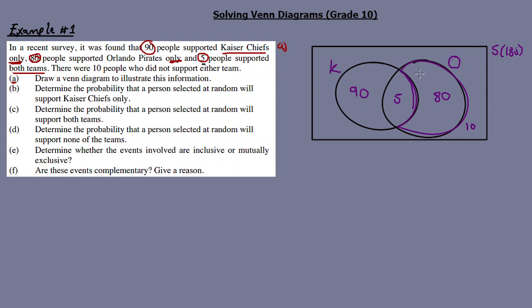In this example we deal with the number of outcomes. You can represent the number of outcomes in Venn diagrams, but sometimes Venn diagrams involve probabilities. When a Venn diagram involves probabilities, you need to make sure all the given values add up to one.